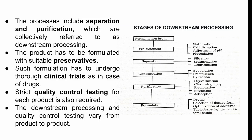This process includes separation and purification, which is collectively referred to as downstream processing. The product has to be formulated with suitable preservatives because it needs to be preserved. Such formulation has to undergo clinical trials, as in the case of drugs. Strict quality control testing for each product is required. The downstream processing and quality control testing may vary from product to product.